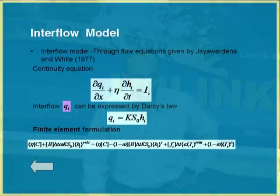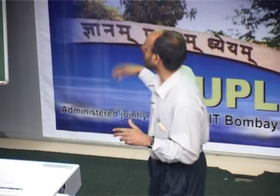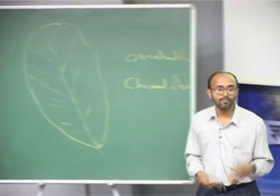Another component is the interflow, defined by the continuity equation: ∂qi/∂x + η ∂h/∂t = ii, where qi is expressed by Darcy's law. This accounts for how much water is coming back to the system with respect to the infiltration rate. The interflow equation is also developed using a Galerkin finite element formulation. Combining all components — interception, interflow, overland flow, and channel flow — at any location we can find what flow is taking place with respect to given rainfall and how much runoff is occurring. The model flow chart starts with input data like excess rainfall, infiltration data, and number and size of elements, then calculates element matrices for channel and overland flow, finds flow depth at different locations through an iterative finite element procedure.